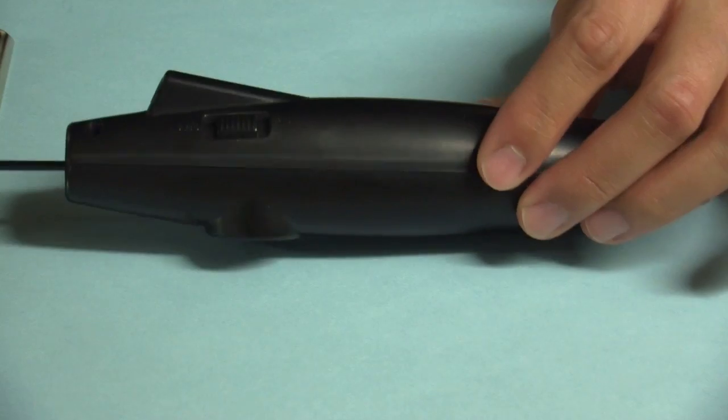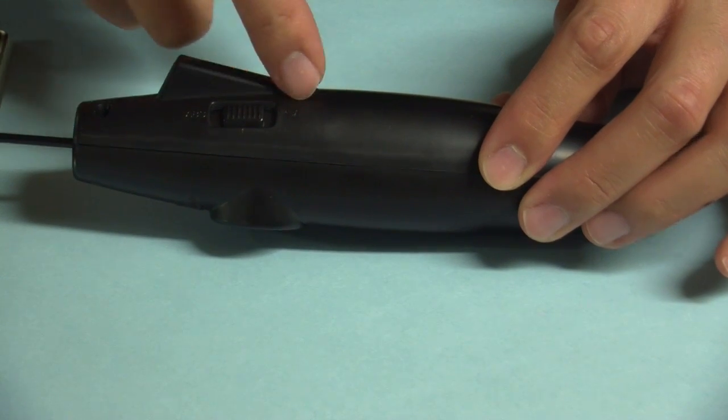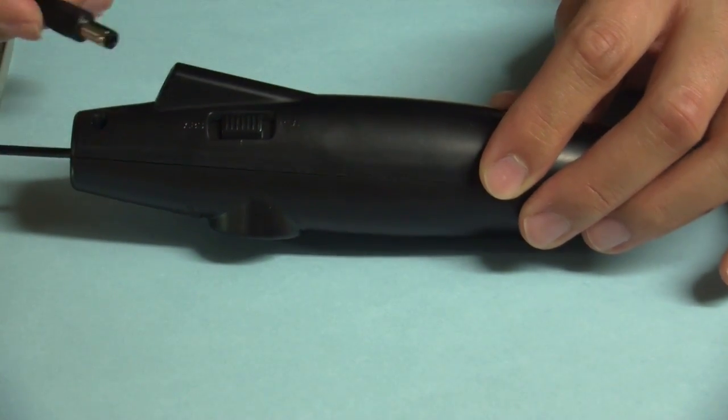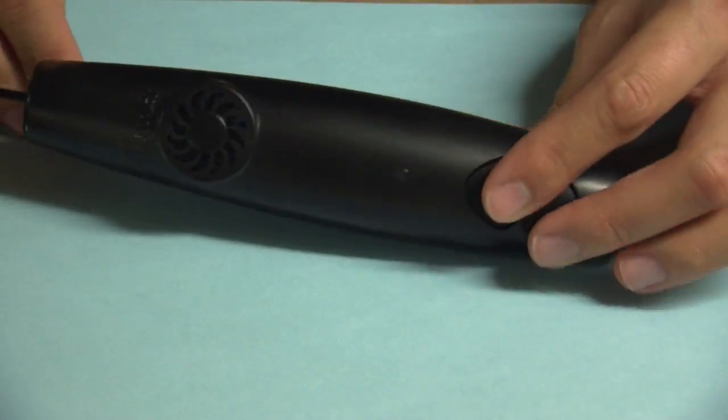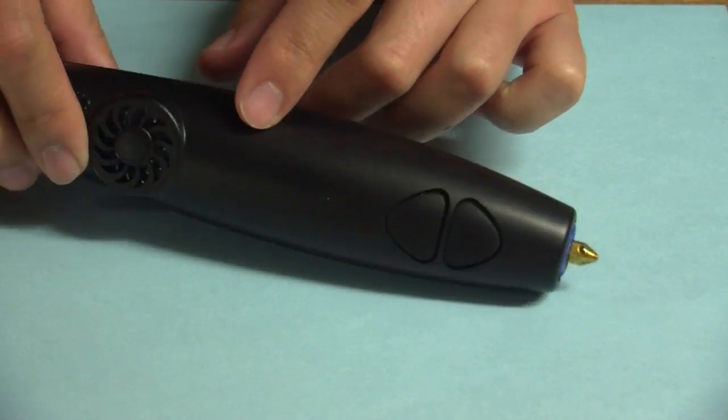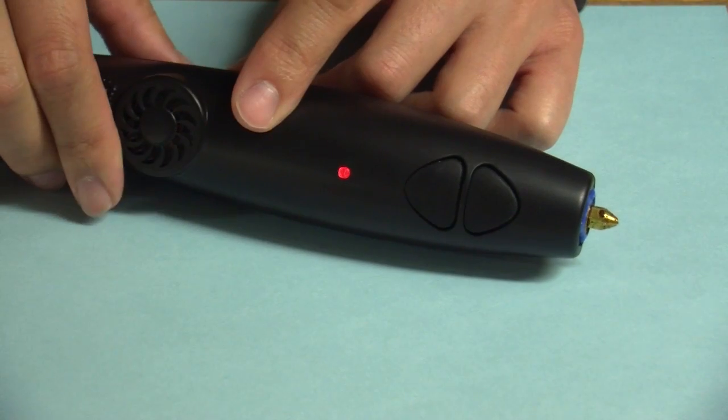And you have two control switches, one for fast extrusion and one for slow extrusion. And as you can see, the device has a built-in fan that also helps cool the plastic as you're pushing it out of the pen.